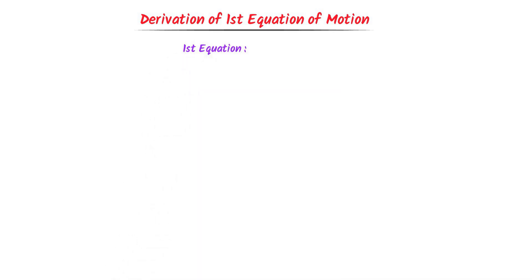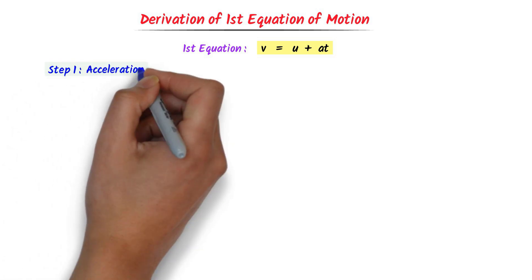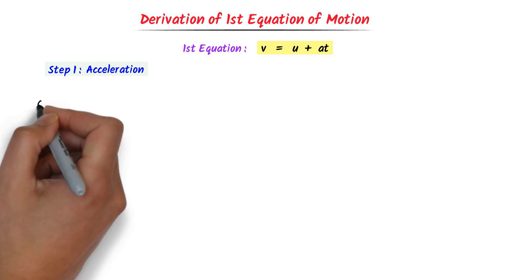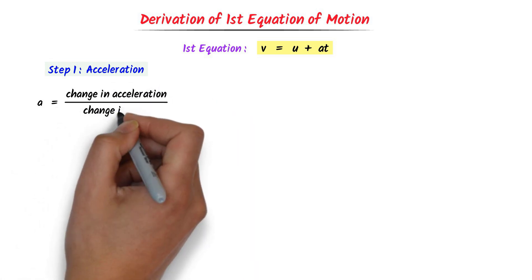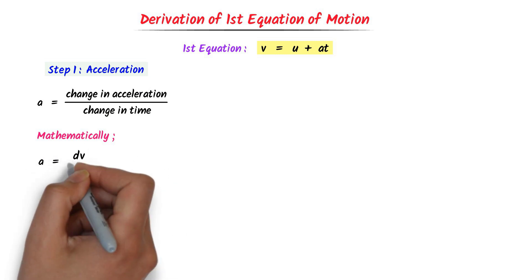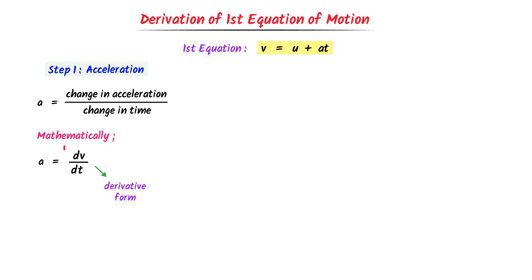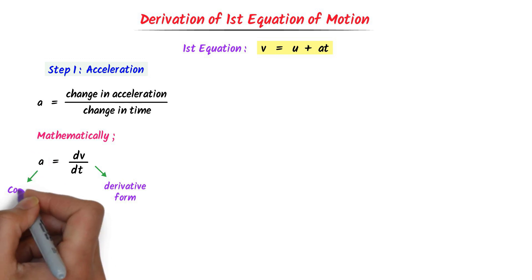The first equation of motion is v = u + at, so our final goal is to derive this equation. I will derive it in two simple steps. In the first step we understand acceleration. We know that acceleration equals change in velocity divided by change in time, and mathematically we write it as a = dv/dt. This means how much velocity changes in a small time. Remember this very important point: acceleration a is constant.